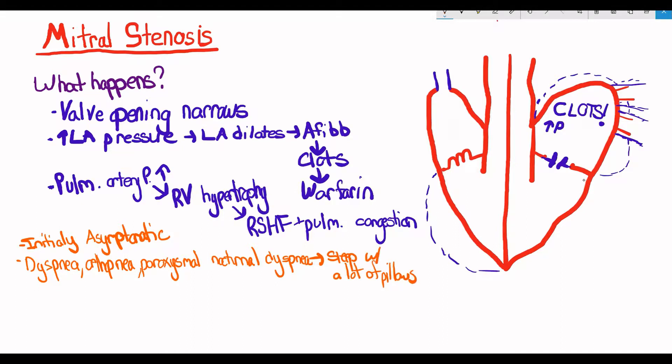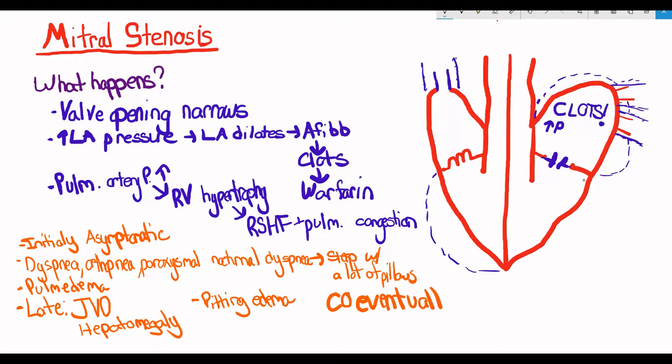It goes away after you sit upright, so you'll see patients with this disease like to sleep with a lot of pillows behind them. In the late stage, you'll see jugular venous distension, hepatomegaly, and pitting edema as the heart fails and the fluid backs up. This is called right-sided heart failure. Cardiac output eventually falls because the left ventricle doesn't get filled enough.